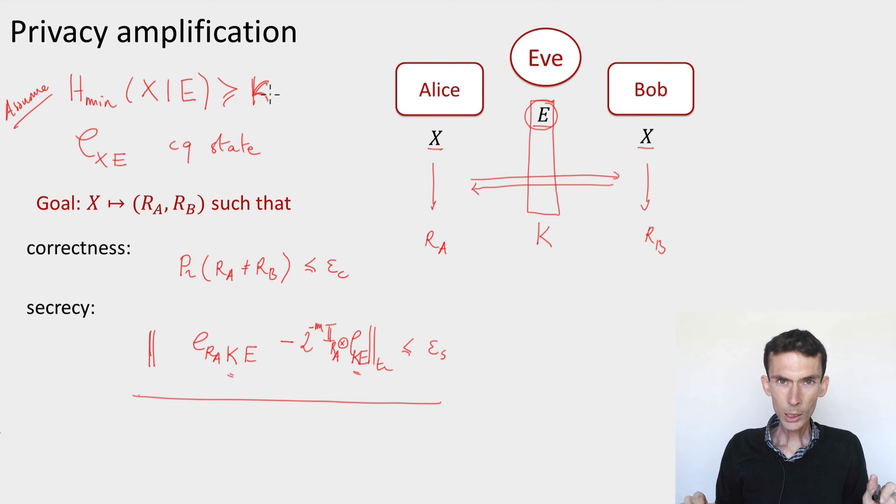Now, this public communication here that's required between Alice and Bob, do we really need it? Because it's making the task a little more complicated. Anything that they say between them that they exchange is going to be leaked to the eavesdropper, so the eavesdropper has more information and makes the task more complicated. Do we really need to communicate in the first place?